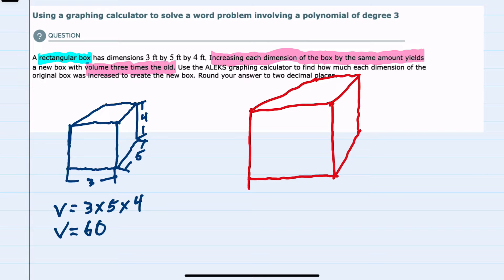For the width, we would add some value X. For the depth, we would add that same value X. And for our height, we would also add X. So this new volume would be (3 + X) times (5 + X) times (4 + X).